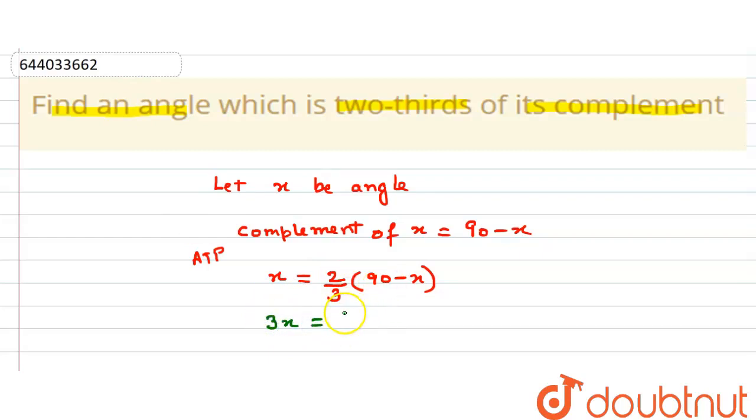Taking 2x to this side, I will get 3x plus 2x equals 180.